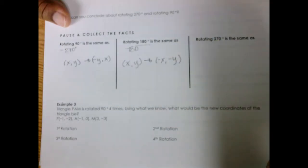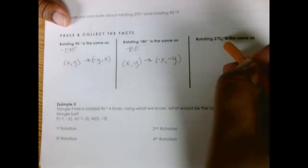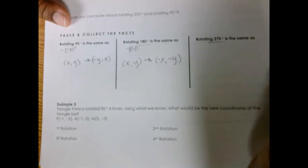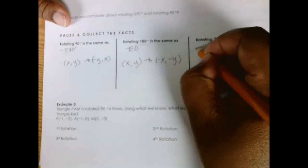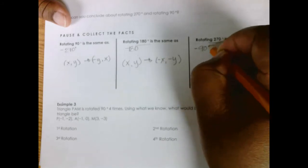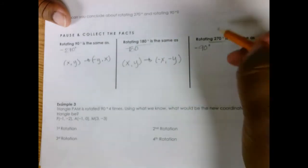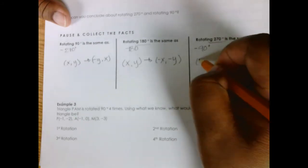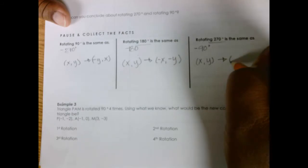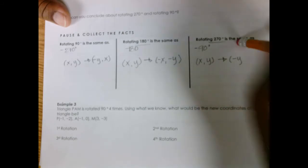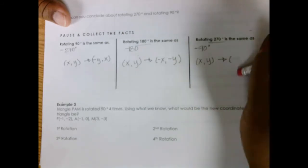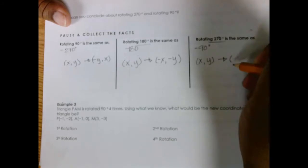Both coordinates change. The last one is rotating 270 degrees, which is the same thing as rotating negative 90 degrees. When we rotate negative 90 degrees or positive 270 degrees, we turn our x comma y into y comma negative x.